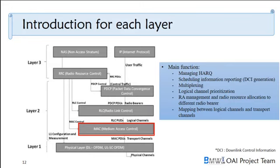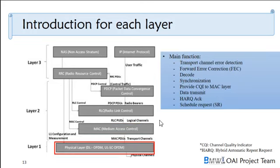In the MAC layer, the main function is to perform resource management for different radio bearers, including modulation and coding scheme, resource block, and control channel elements. It also handles multiplexing and HARQ. The physical layer's main function is transport channel error detection, synchronization, HARQ ACK, and scheduling requests.